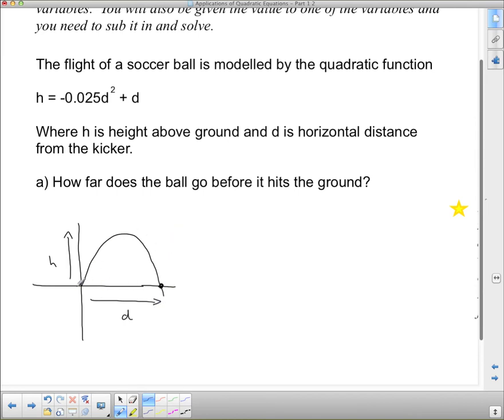So I need to sub in a 0 for h in my equation. So I'm going to say 0 equals negative 0.025d squared plus d. And we need to solve for d so I know my horizontal distance.